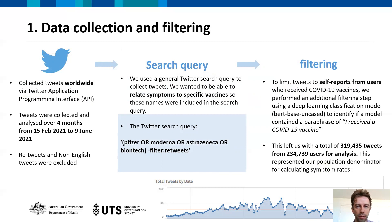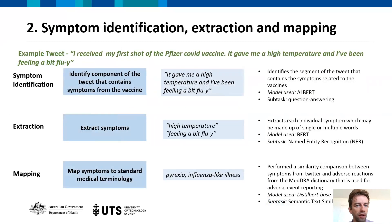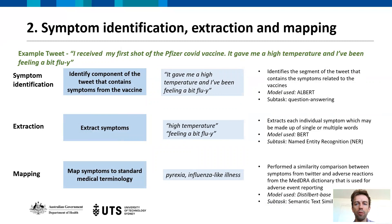To give an idea of how this works: an example tweet is 'I received my first shot of the Pfizer COVID vaccine. It gave me a high temperature, feeling a bit fluidy.' One model performs a question-answering task — we're specifically interested in extracting symptoms related to having received the vaccine, not other symptoms mentioned in the tweet. In this case it would extract 'gave me a high temperature' and 'feeling a bit fluidy.'